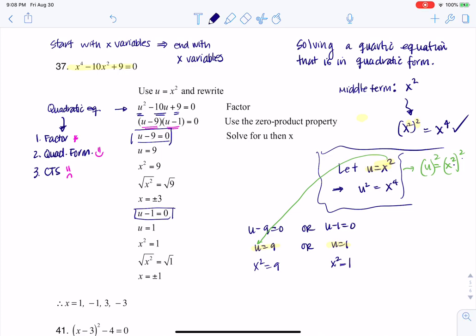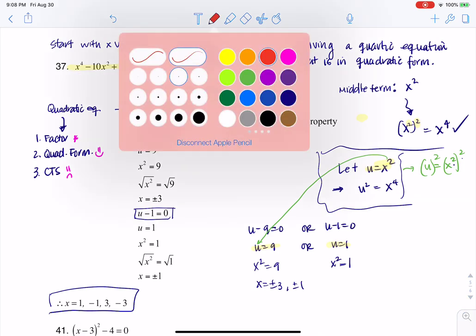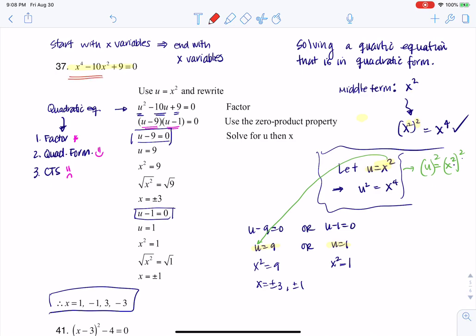And then I can square root both sides, making sure to remember the pluses and minuses. And I will get x is equal to plus or minus 1 or plus or minus 3. And when I write that out, there we go. Right? Now, again, I started with x's. I ended with x's. Hold on. Let me do different colors and say that dramatically again. I started with x's and I ended with x's.